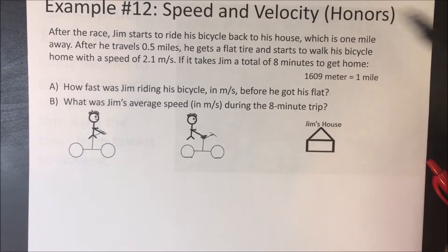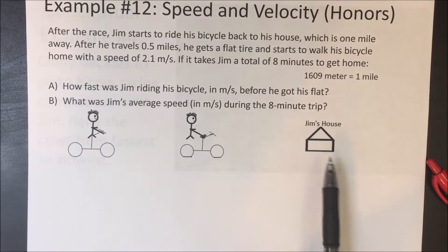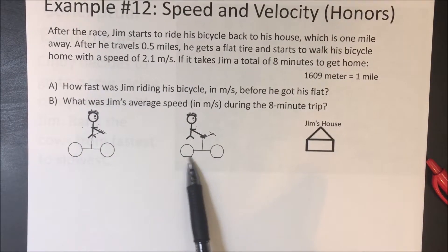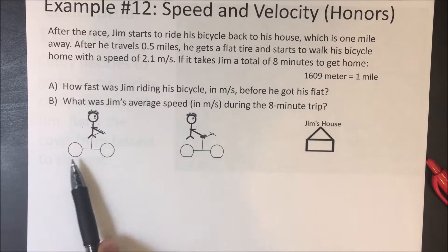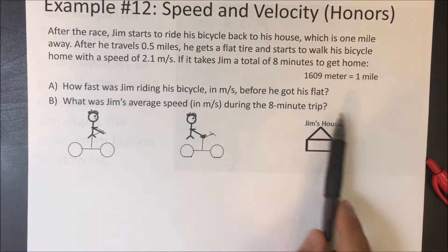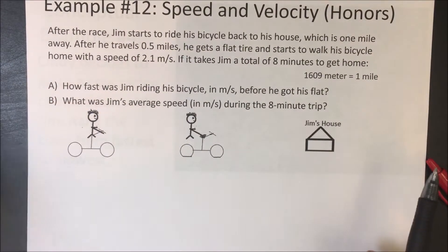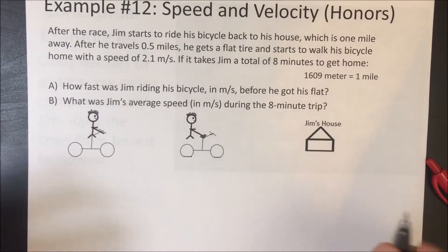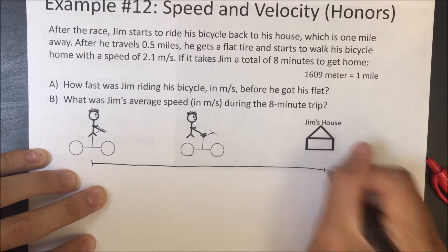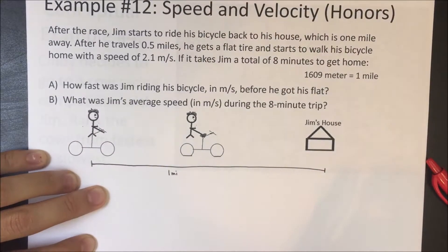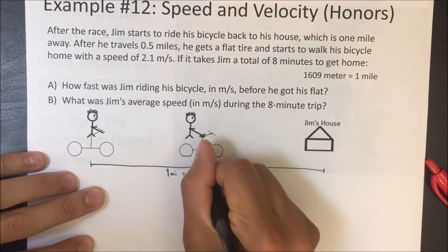Last question — honors problem for speed and velocity. After the race, Jim starts to ride his bicycle back to his house, which is one mile away. After he travels 0.5 miles he gets a flat tire and starts to walk his bicycle home at a speed of 2.1 meters per second. If it takes Jim a total of 8 minutes to get home, how fast was Jim riding his bicycle in meters per second before he got the flat? One mile equals 1609 meters.